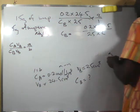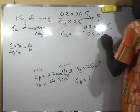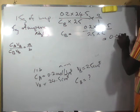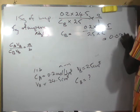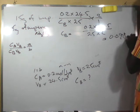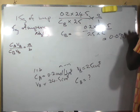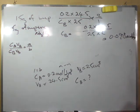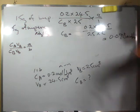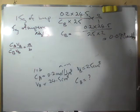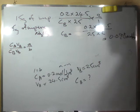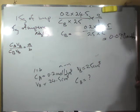That gives us 0.098 mol/dm³. So the concentration of the sodium trioxocarbonate is 0.098 mol/dm³.